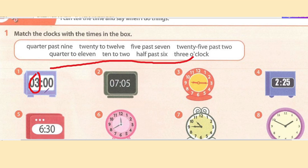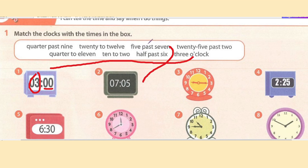Number two shows seven zero five on the digital clock. We have to find the matching answer. The answer that has seven and five is 'five past seven.' 'Past' means sudah melepasi — the hour is seven, and the five refers to the minutes.